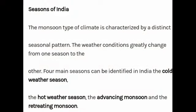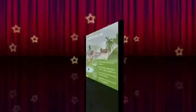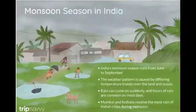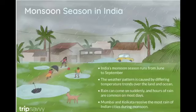The monsoon type of climate is characterized by a distinct seasonal pattern. The weather conditions greatly change from one season to another. Four main seasons can be identified in India: the cold weather season, the hot weather season, the advancing monsoon, and the retreating monsoon. The monsoon season is a heavy rainy season in India.